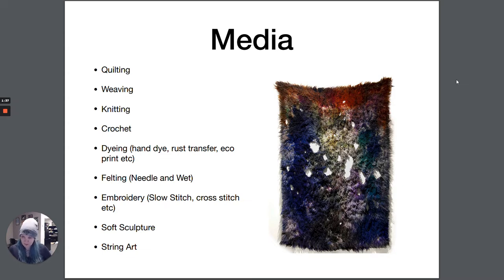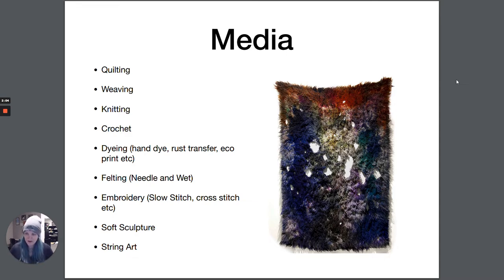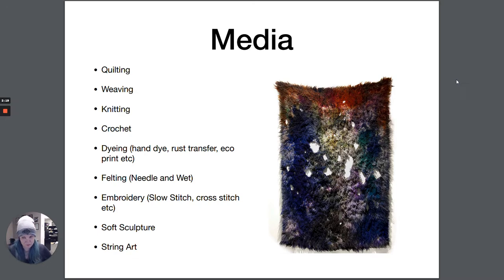Felting — we have needle felting and wet felting, and I'll tell you what that means in a minute. Embroidery is another one you might be familiar with; a subcategory of that is cross-stitching. Embroidery, knitting, and crocheting have really had a big comeback — first with millennials, and then Gen Z seems to be continuing some of these DIY type things. Then I'm going to talk a little bit about soft sculpture, and then string art, which is related to installation art, which we've talked about before.